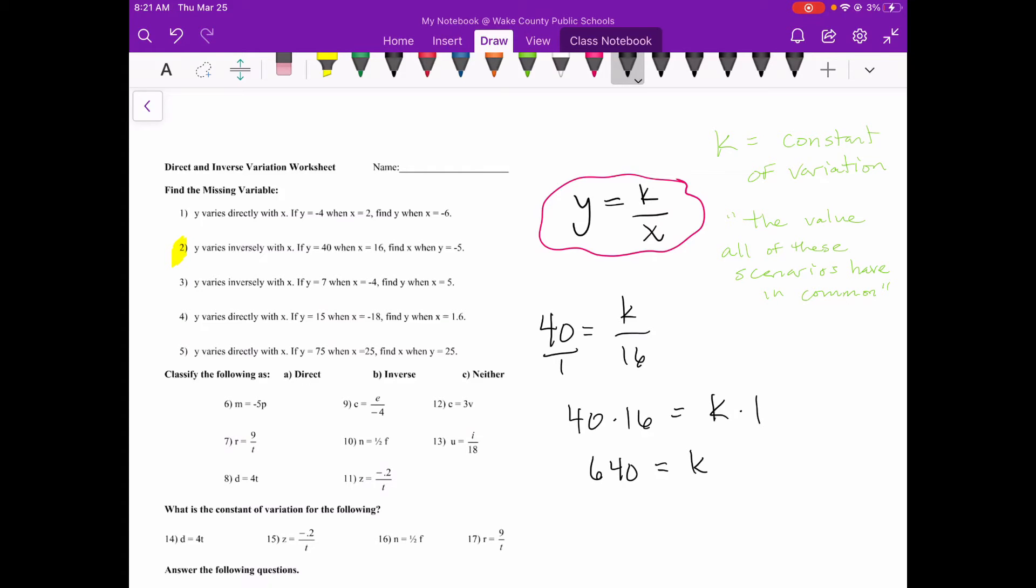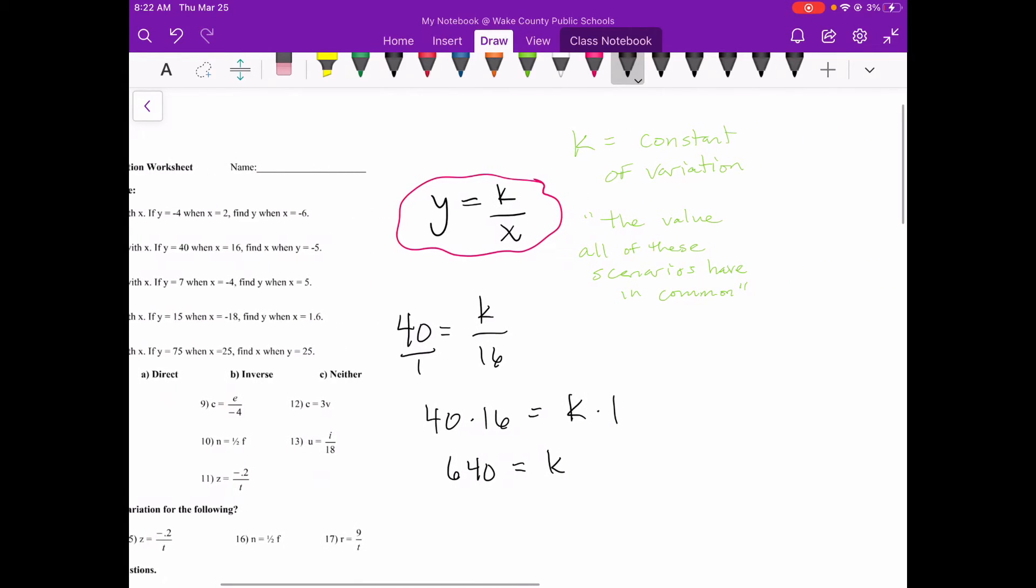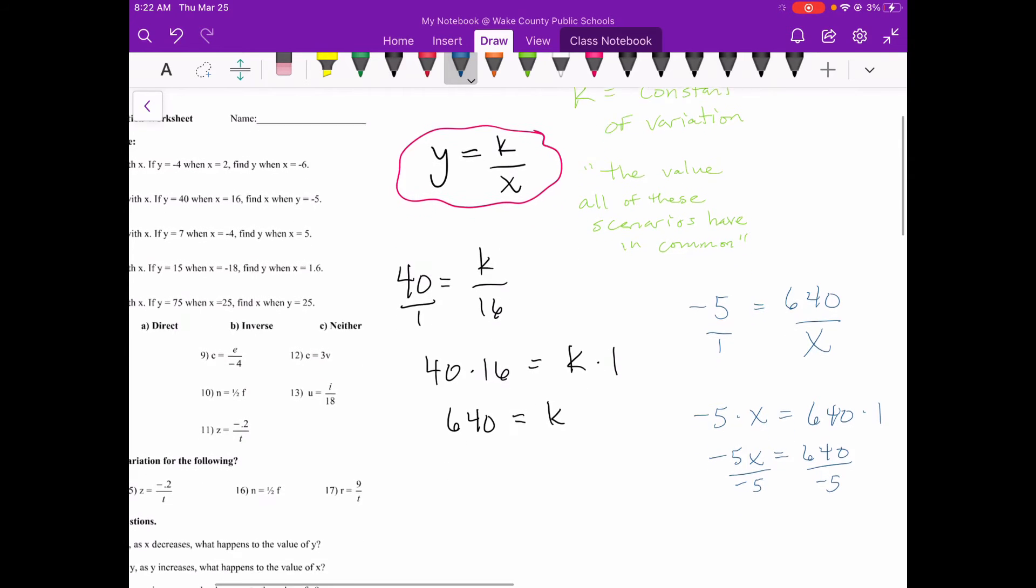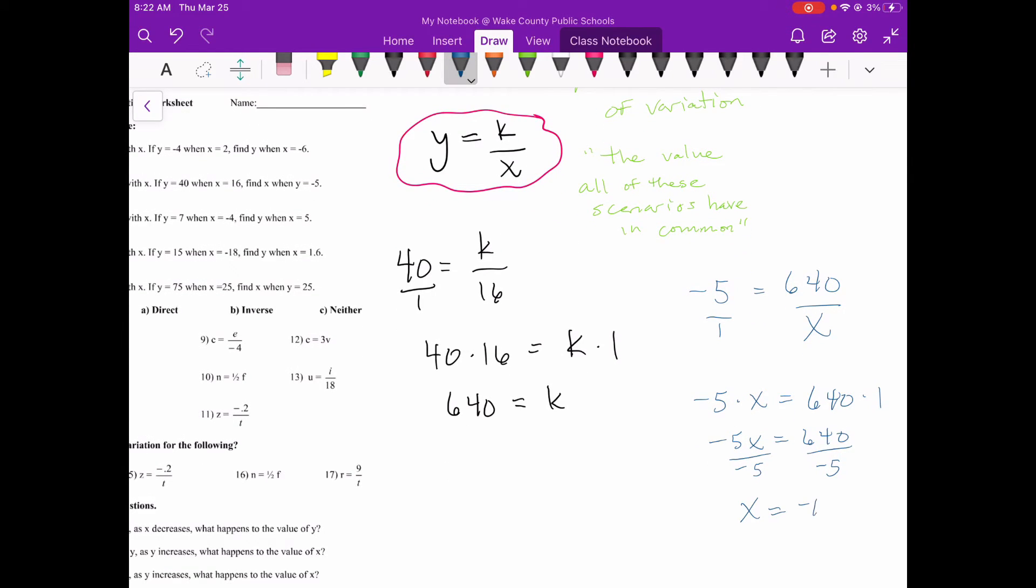The second scenario that they want us to find is find x when y is negative five. So using a different color here, when y is negative five, I want to find x. So notice that I plugged in for y and k because I knew those values. And again, I'm going to do the same thing where I make it a proportion and I'm going to cross multiply and then I'll solve for x. Negative five x is equal to 640. Then you just divide both sides by negative five and you get x is equal to negative 128.